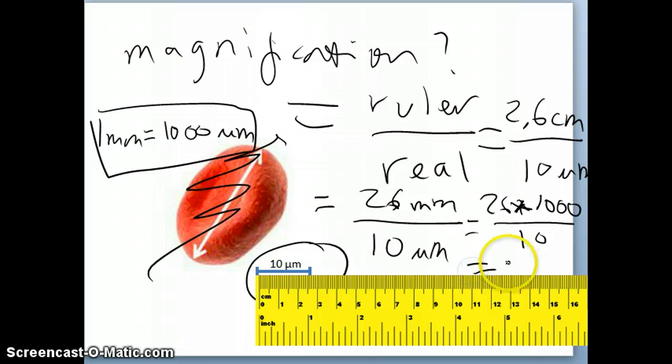So that would be 26 multiplied by 1,000 divided by 10. So, that is this, 2,600. Magnification of 2600. This is your answer.